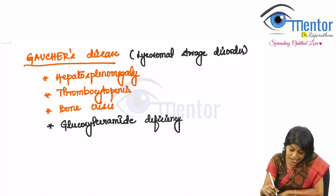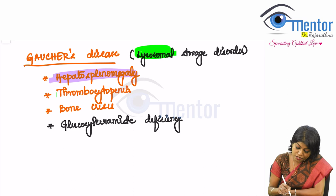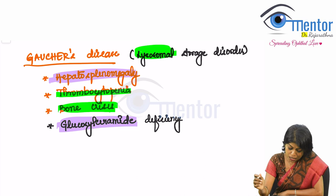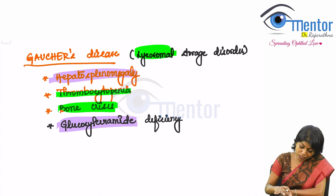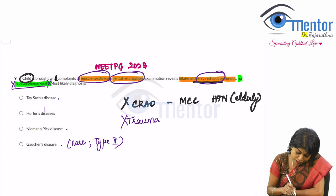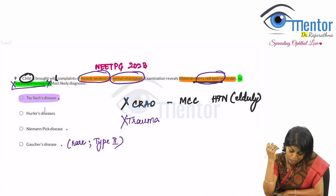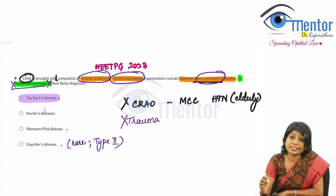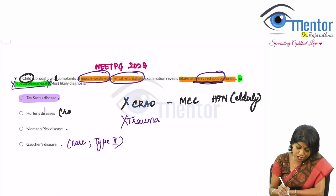Gaucher's disease also has hepatosplenomegaly, which rules it out for this question. It is a lysosomal storage disorder with thrombocytopenia, bone crisis, and osteonecrosis. The deficient enzyme is glucosylceramidase. Cherry red spot in Gaucher's is very rare and only seen in type 2. In mucopolysaccharidosis, cherry red spot is also rare. Therefore, the answer is Tay-Sachs disease.